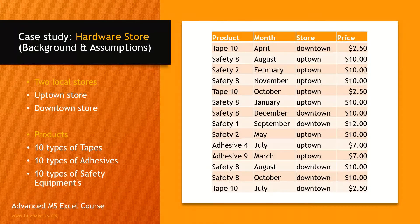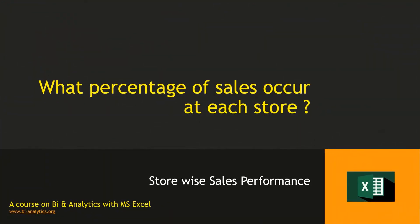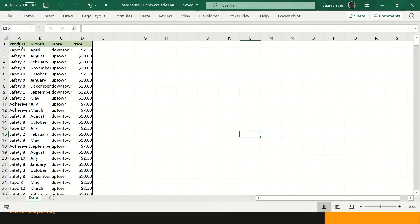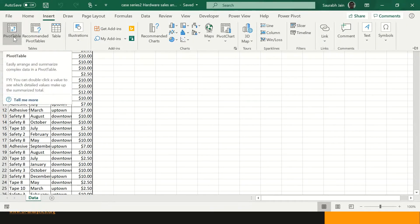We have some questions and we will try to answer them with the help of pivot tables. The first question is: what percentage of sales occur at each store? If we have total sales of 100%, how much has been done at store number 1 and how much at store number 2? Let's start. Here we have the complete data set. We have to use a pivot table, so I will go into the Insert tab and insert a pivot table.